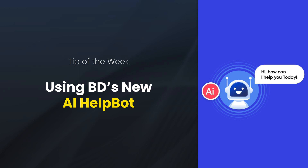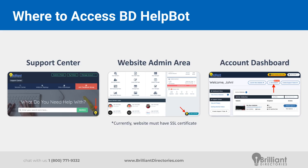It's essentially a new line of support for everybody with a BD site. You can access it directly in the support center. There's an icon in the bottom right of your screen — that's the Brilliant Directories light bulb. If you click that, it'll open up the chat bot window, so you can access it while you're in the support center.